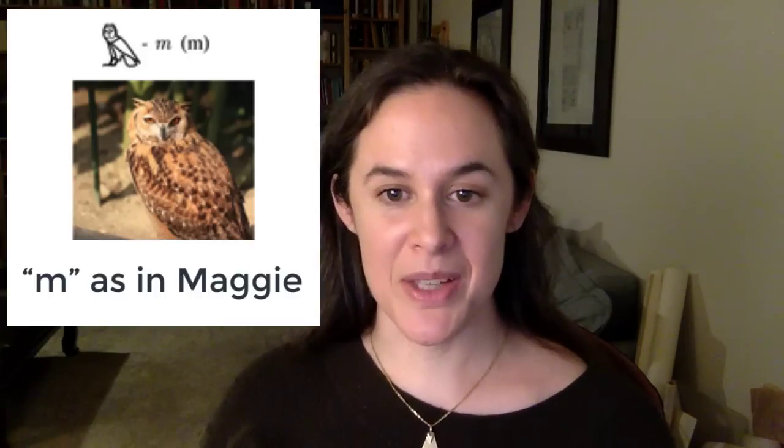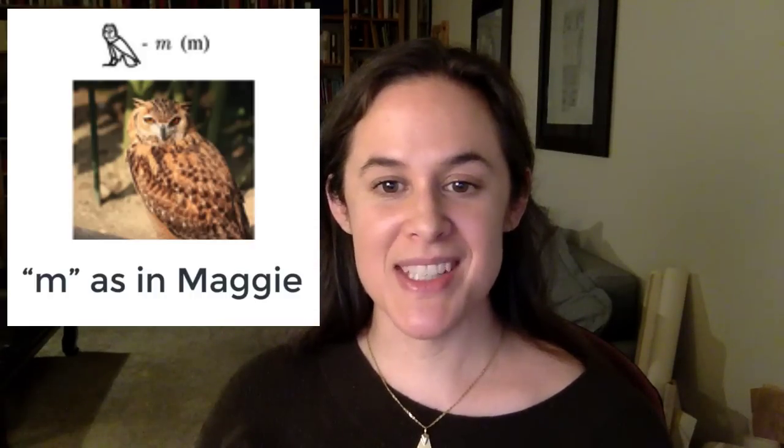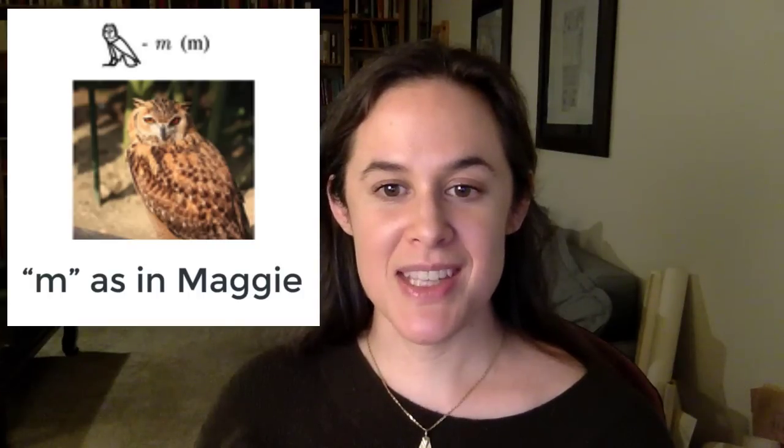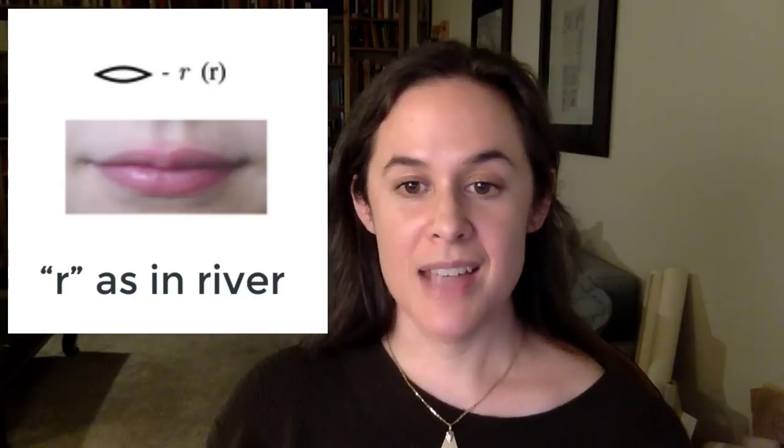Our next hieroglyph is one of my personal favorites. It depicts an owl and represents the sound M, as in 'Maggie.' Our next hieroglyph, a horizontal zigzag line, represents ripples in water. It's pronounced N, as in 'Nile.' Next, we come back to the sound R, as in 'river,' represented by a depiction of a human mouth.